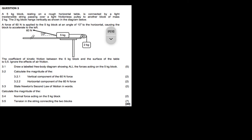What's up guys, I'm back again with another video on Newton's laws of motion, treating another question from a past exam paper. A 5 kg block resting on a rough horizontal table is connected to a light inextensible string passing over a light frictionless pulley to another block of mass 2 kg. A force of 60 newtons is applied to the 5 kg block at an angle of 10 degrees to the horizontal, causing the block to accelerate to the left.